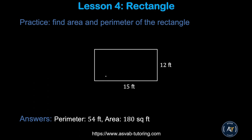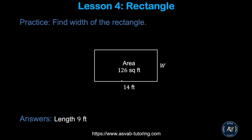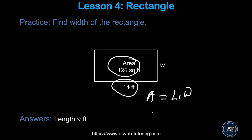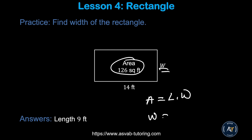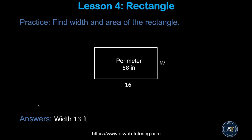Pause the video and try the practice problems by yourself. Make sure you get perimeter = 54 and area = 180 for the first one. For the next problem, area is given as 126 and length is 14 — use width = area ÷ length. Make sure you get width = 9.